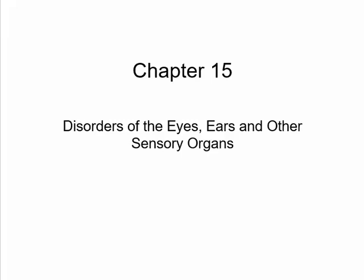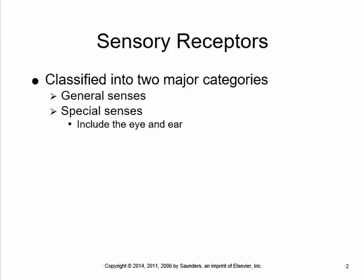In this video, we're going to be talking about disorders of the eyes. First, we're going to look at a few things about sensory receptors and sensation. There are general senses and special senses, and that includes the eye and ear, which is really the topic of this unit in pathology.